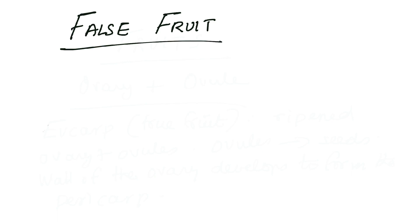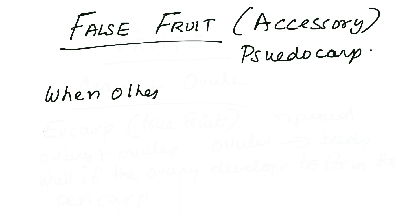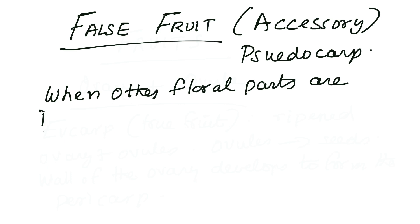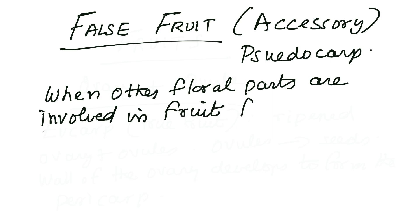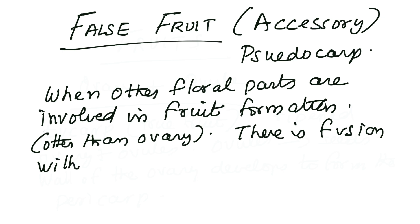The second division is where along with the ovary, other parts of the flower — other floral parts — also develop and become part of the fruit. That is called a false fruit. The technical term is pseudocarp. When other floral parts along with the ovary and ovule are involved in fruit formation, we call it a false fruit or accessory fruit.